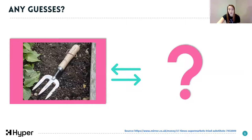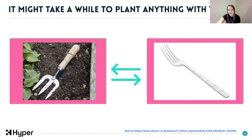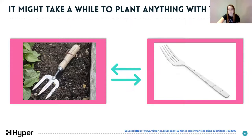The next example is a garden fork, which you'd imagine to use in the garden for maybe some digging or weeding. And I think you might struggle to use what it was substituted for instead - it would definitely take you a long time to do your gardening with it, and I'm not sure you'd want to eat your dinner off of it afterwards.